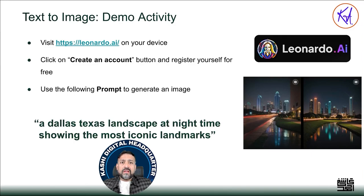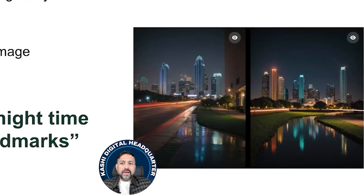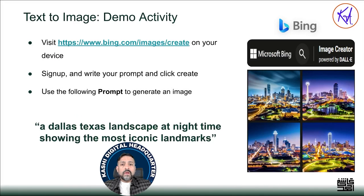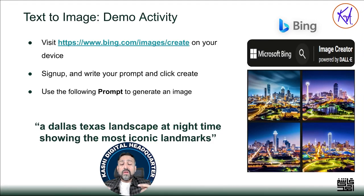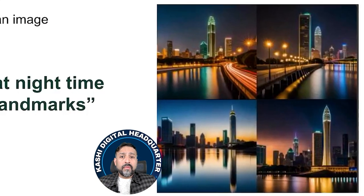Leonardo.ai is one of my favorites — a free tool with a lot of features. They have paid accounts too. Go ahead and create an account at leonardo.ai; I'd suggest using Google, Apple, or Microsoft sign-in for speed. It gave me two pictures of the Dallas landscape at night. Try this in Leonardo for yourself. One more tool: Microsoft Bing is invested in OpenAI, so their Image Creator is powered by DALL-E — they may even have access to DALL-E 3. Go to bing.com/images/create, sign in using your Hotmail or Outlook account, give the same prompt, and you'll see pictures generated by Bing Image Creator.